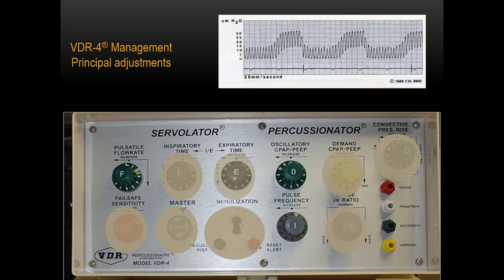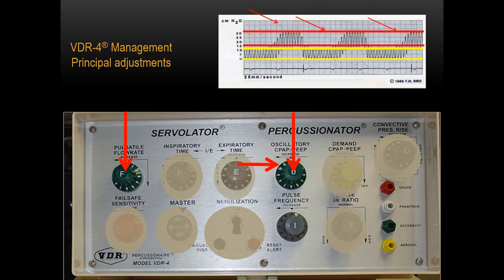Let's really drill down to the waveform and look at the principal adjustments. What do I do about 70% of the time when I manipulate the ventilator? Well, truly, I adjust the two flows. Either the inspiratory flow, which is called pulsatile flow rate. Or I adjust the expiratory flow, which is called oscillatory CPAP or PEEP. Then I can also independently adjust the pulse frequency to either affect oxygenation or CO2 removal. Let's go look at a patient and set it up on the ventilator.